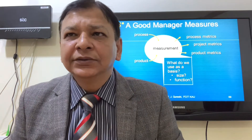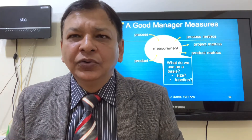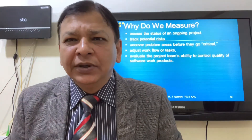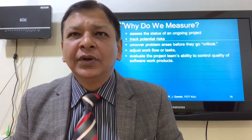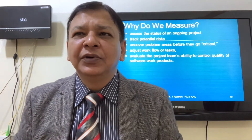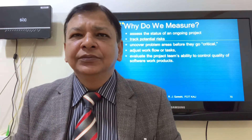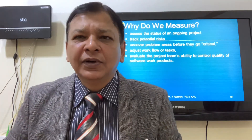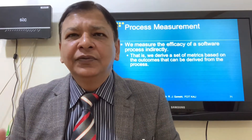What do we use — size-oriented metrics or function-oriented metrics? Why do we measure? We measure to assess the status of an ongoing project, track potential risks, uncover problem areas before they go critical, adjust workflows or tasks, evaluate the project team's ability to control quality of software work products. Process measurement measures the efficiency of a software process indirectly.